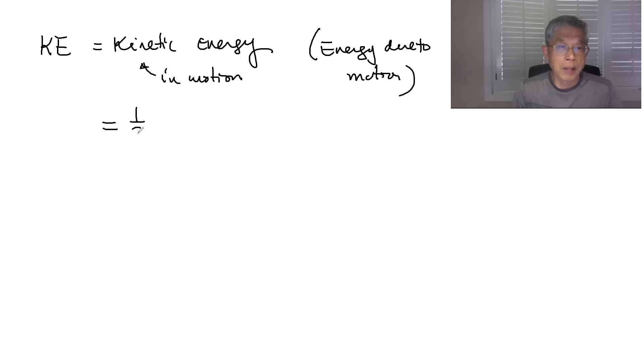So kinetic energy is defined as one half m, m is the mass, times the v squared. So v is the velocity here.